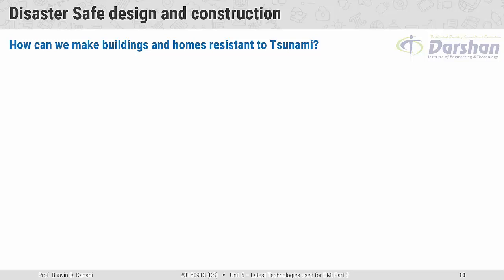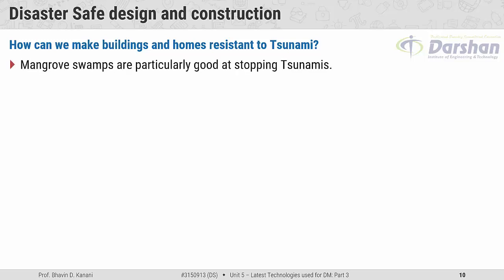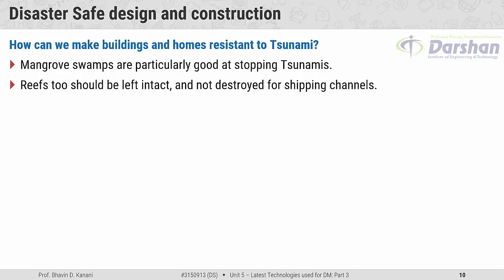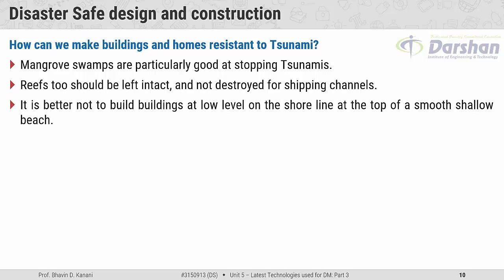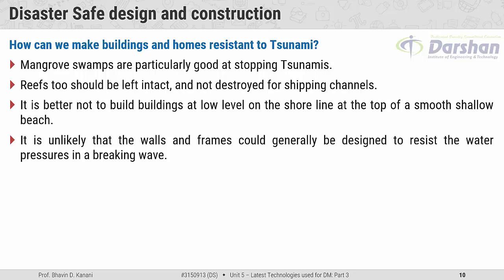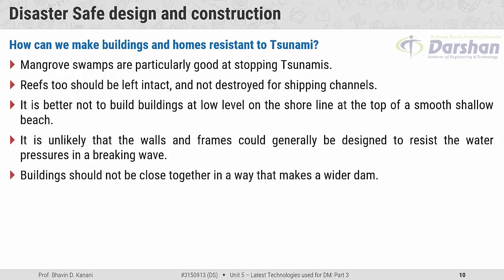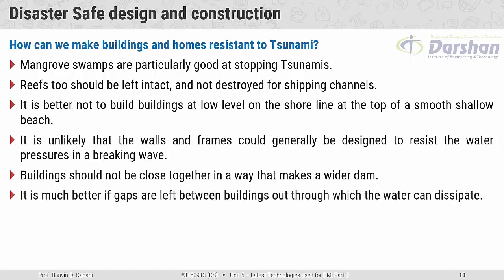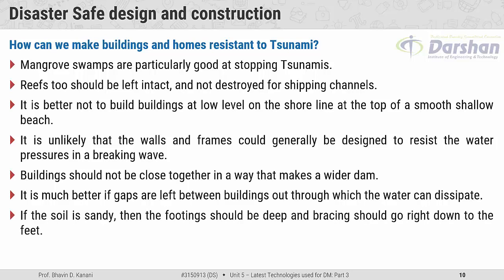How can we make buildings and homes resistant to tsunamis? Mangrove swamps are particularly good at stopping tsunamis. Reefs should be left intact and not destroyed for shipping channels. It is better not to build buildings at low level on the shoreline at the top of a smooth beach. It is unlikely that walls and frames could generally be designed to resist the water pressure in a breaking wave. Buildings should not be close together in a way that makes a wider dam — gaps should be left between buildings through which the water can dissipate. If the soil is sandy, the footing should be deep and bracing should go right down to the feet.